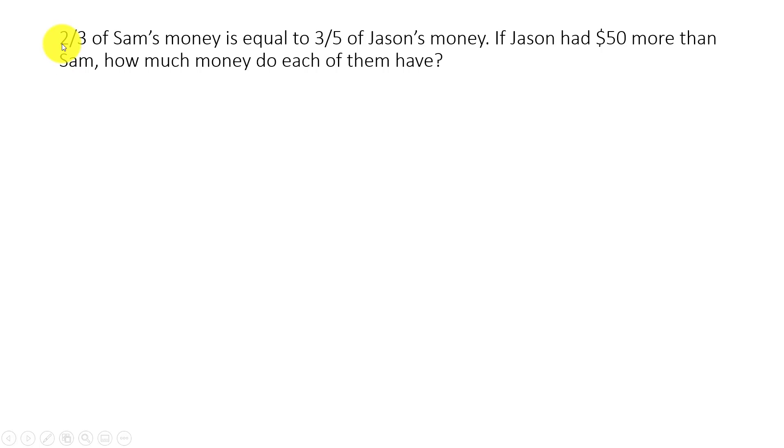The problem statement is this: two thirds of Sam's money is equal to three over five of Jason's money. If Jason had $50 more than Sam, how much money do each of them have?